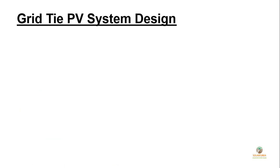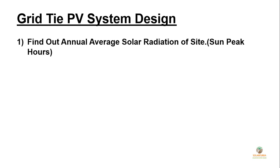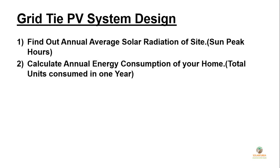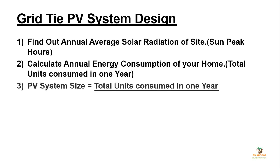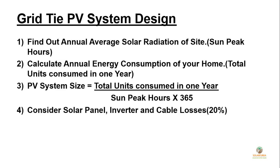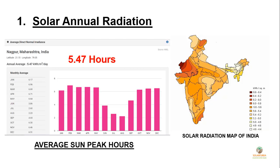Now we will learn how to design a grid-type PV system. If you want to know how much kilowatt of PV solar system you need, follow these steps: First, find out the annual average solar radiation of your location — that equals the sun peak hours. Then calculate the annual energy consumption of your home — the total number of units consumed in one year. Then use the formula to find PV system size, consider losses in the PV system, and finally make a list of materials required for the solar project.